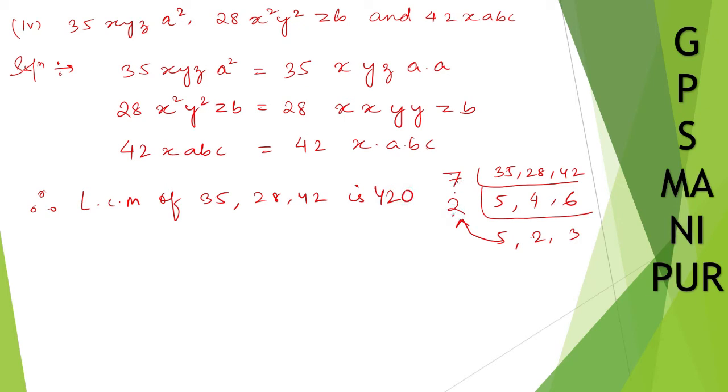Okay. 7 times 14, 14 times 5 is 70. 72, 140. 140 into 3. 140 into 3, 4, 2, 3, 3, 4. So 420. If you find the LCM of this all, you are going to get 420.